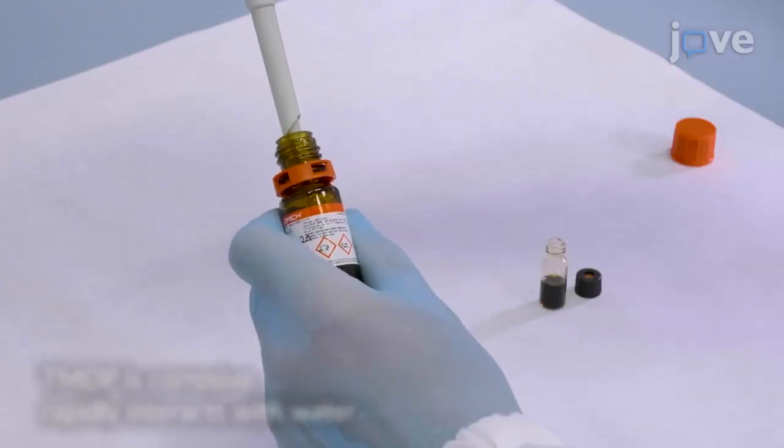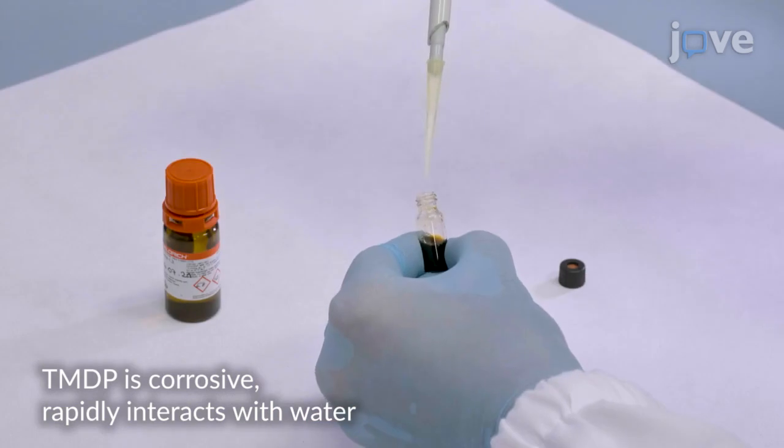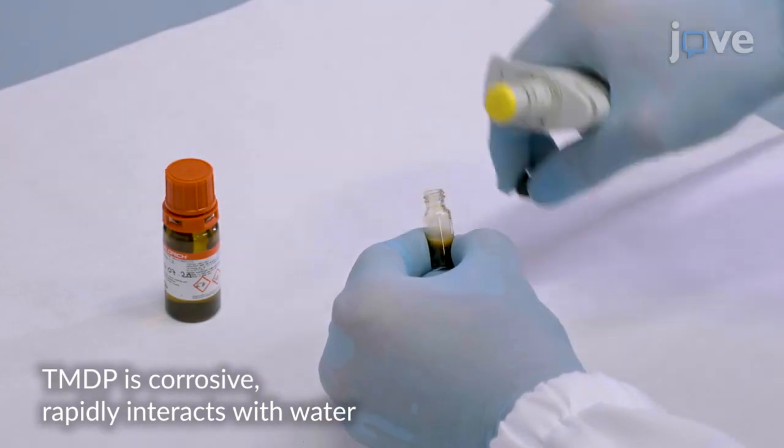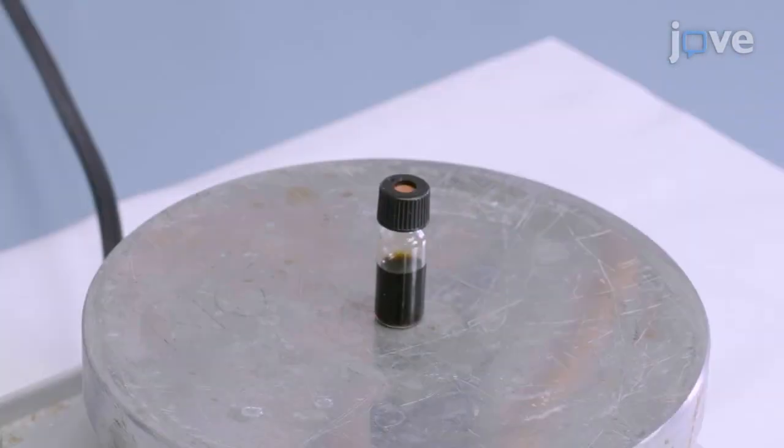When the sample is completely dissolved, transfer 100 uL of tetramethyl-dioxiphospholane (TMDP) to the sample solution while working under the hood. Seal the sample solution before placing it for vigorous magnetic stirring.